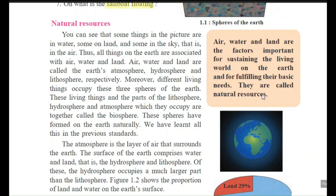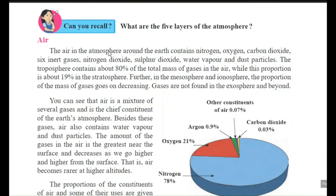First among natural resources is air. The air in the atmosphere around the earth contains nitrogen, oxygen, carbon dioxide, six inert gases, nitrogen dioxide, sulfur dioxide, water vapor and dust particles. The troposphere contains about 80% of the total mass of gases in the air, while this proportion is about 19% in the stratosphere.